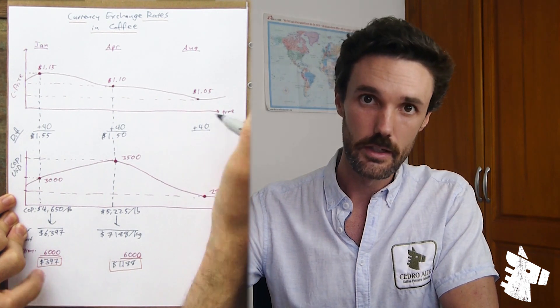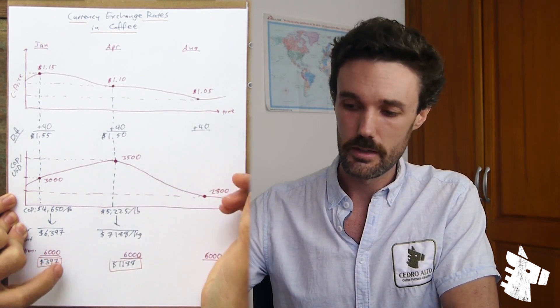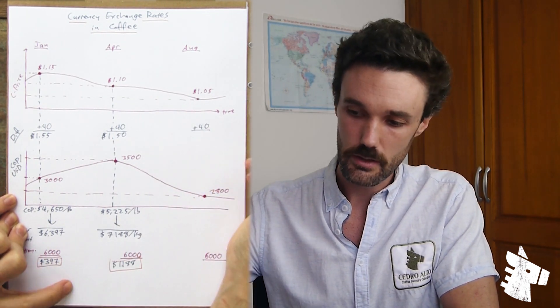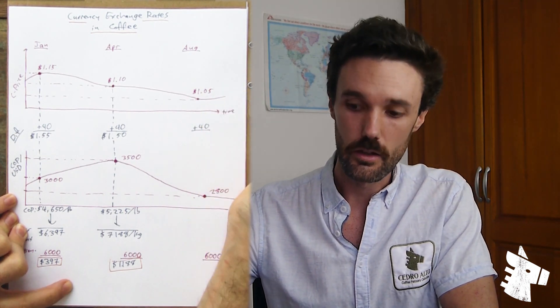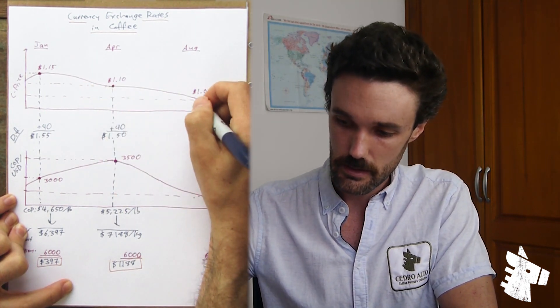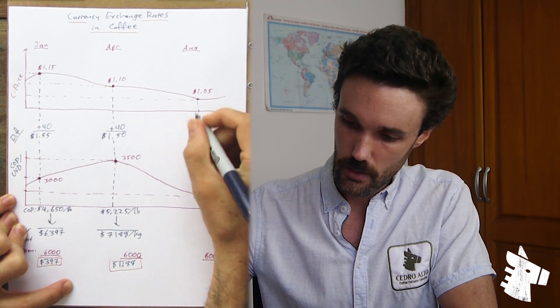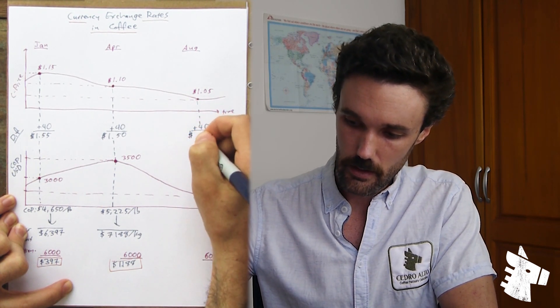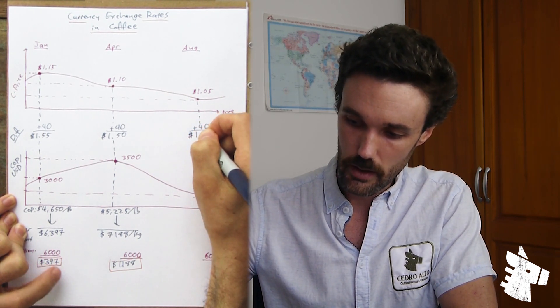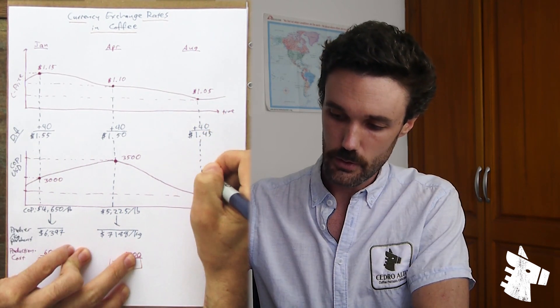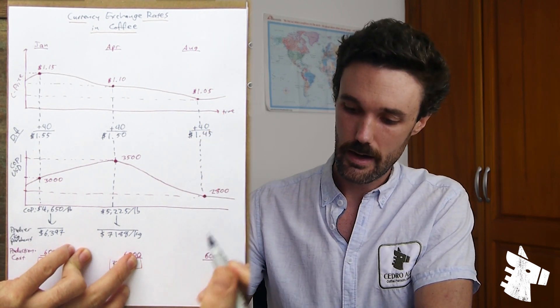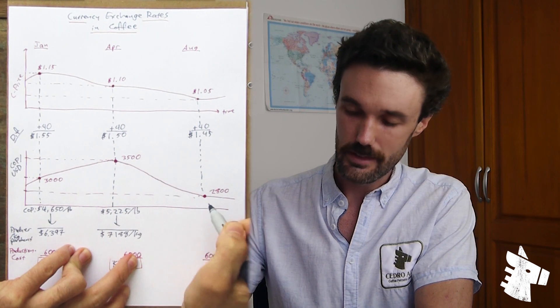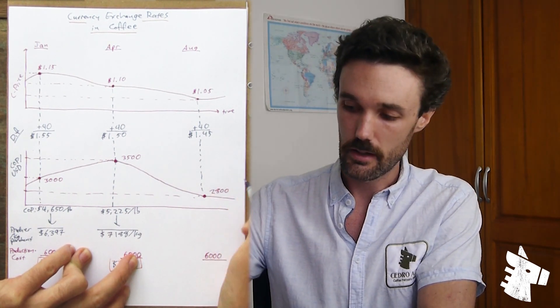Say in August of that same year, that same agreement with the importer is in place, plus 40 differential. But now, the C price is at $1.05. It fell another 5 cents. Plus 40, then our FOB price is $1.45. Now we need to translate this into Colombian pesos. But now, the Colombian peso has appreciated with respect to the US dollar. Now, it only takes 2,800 Colombian pesos to buy one US dollar.